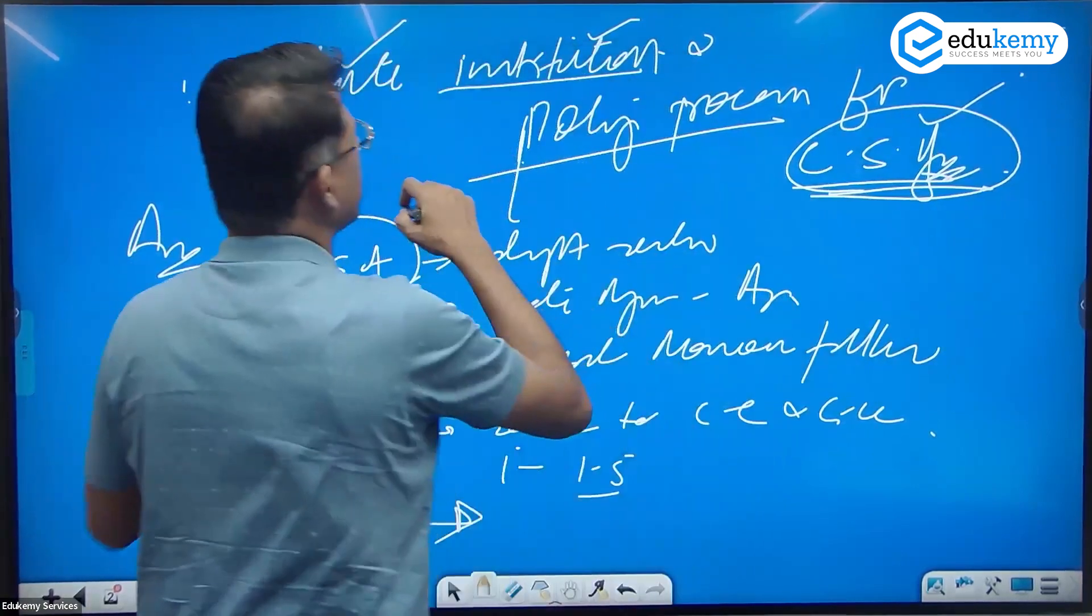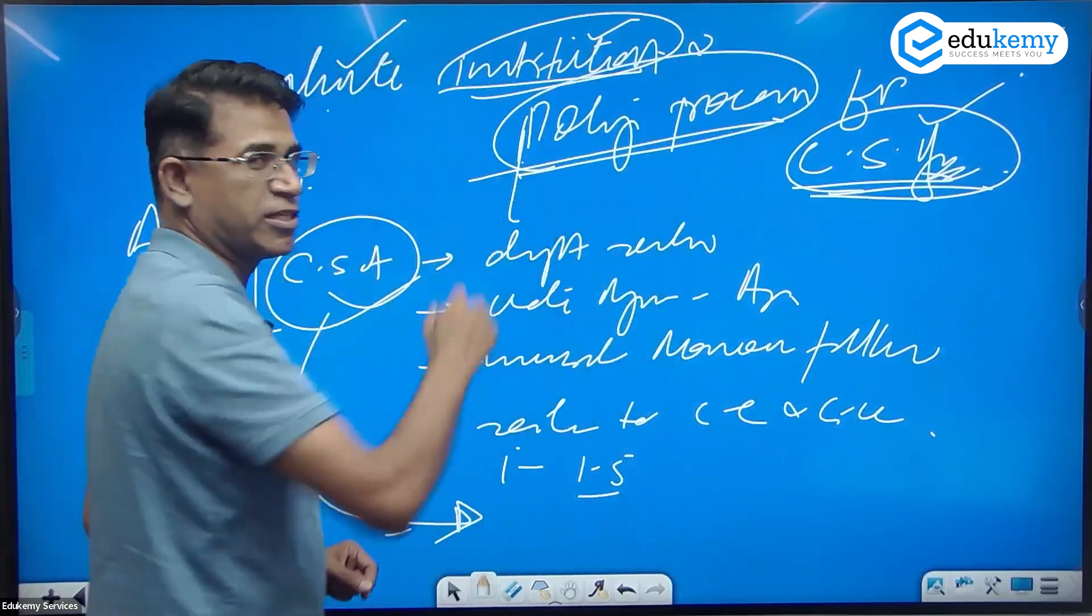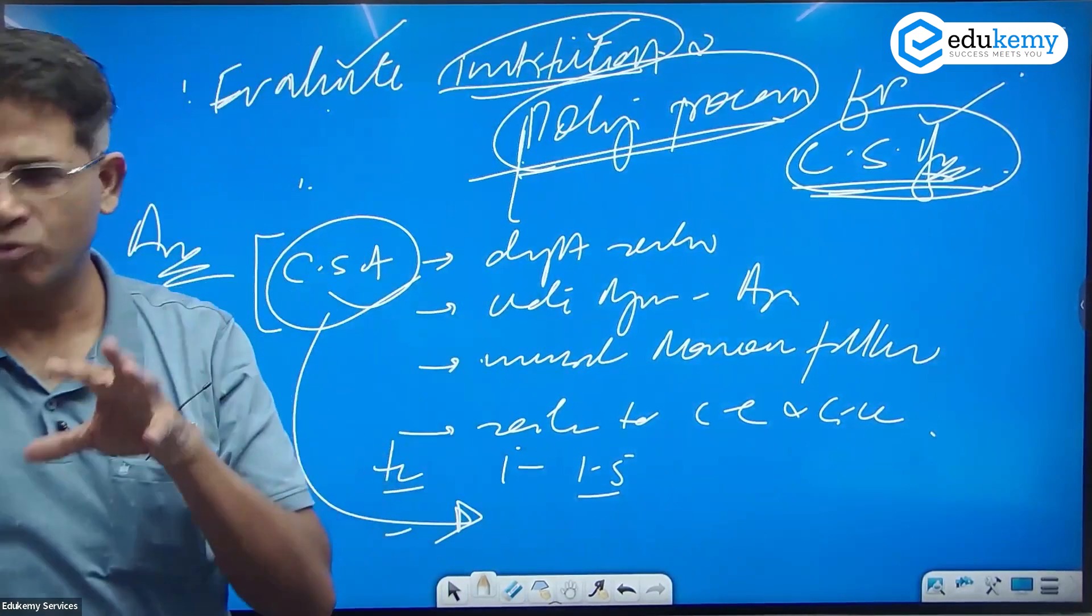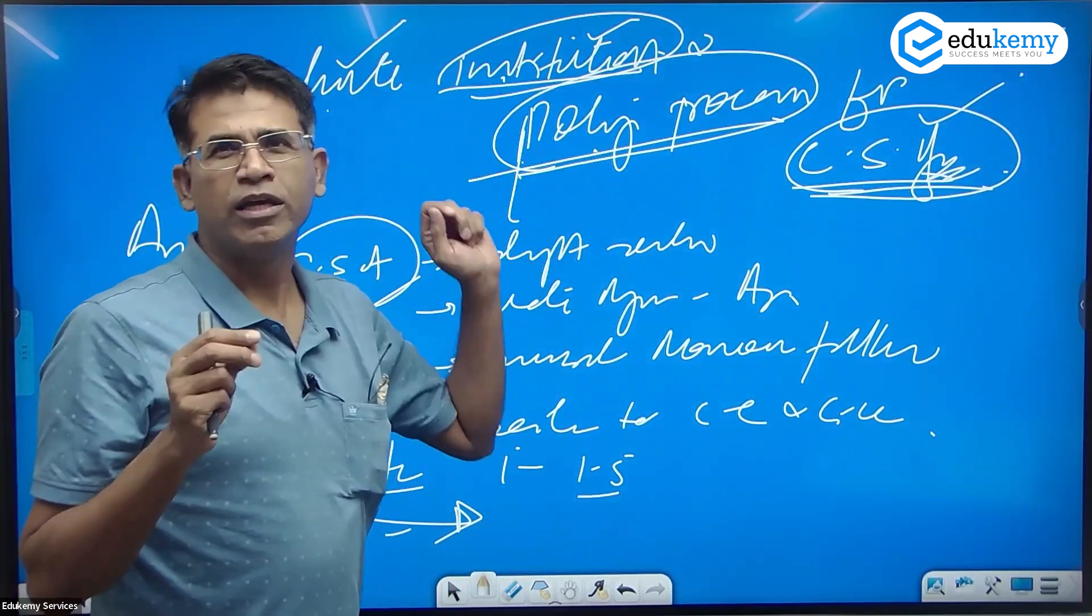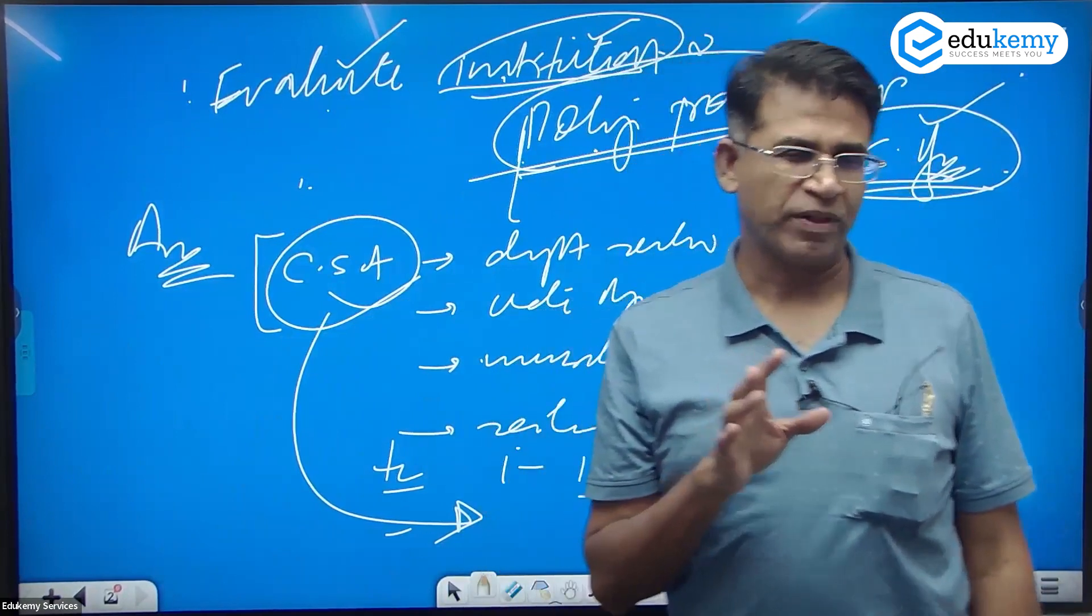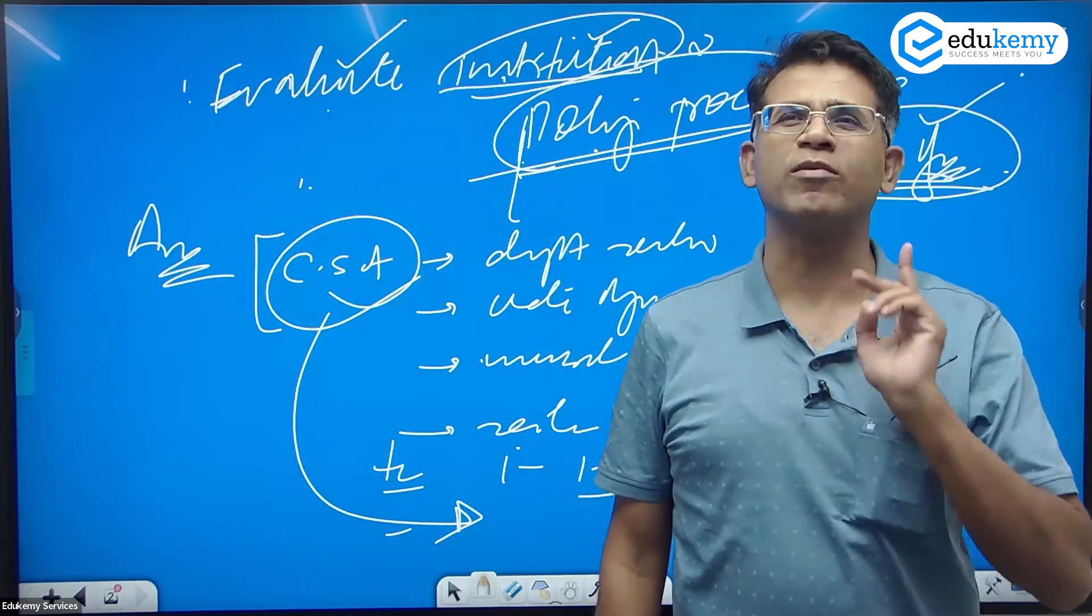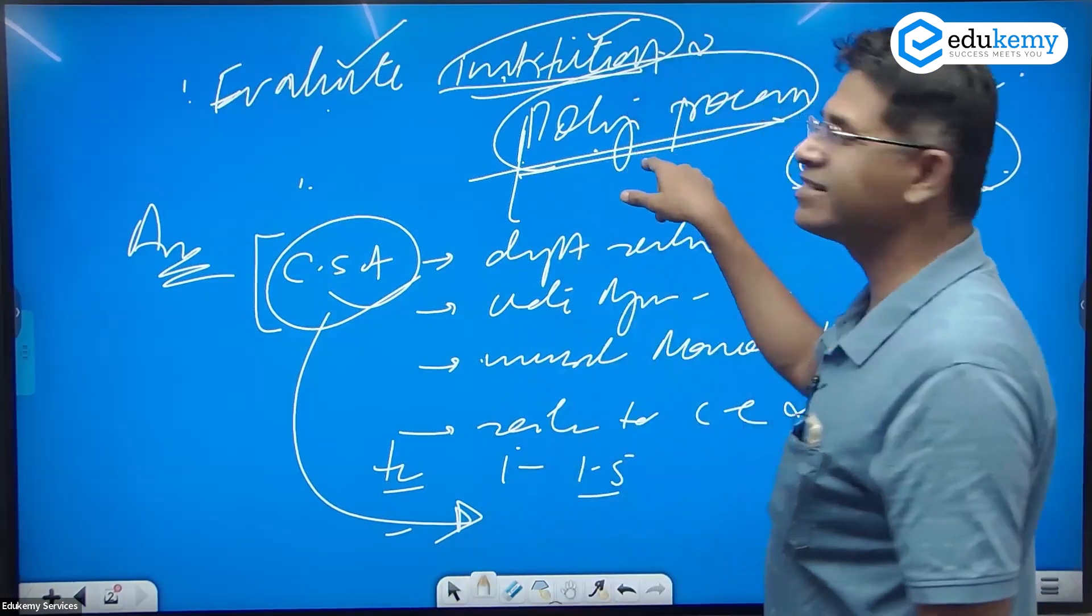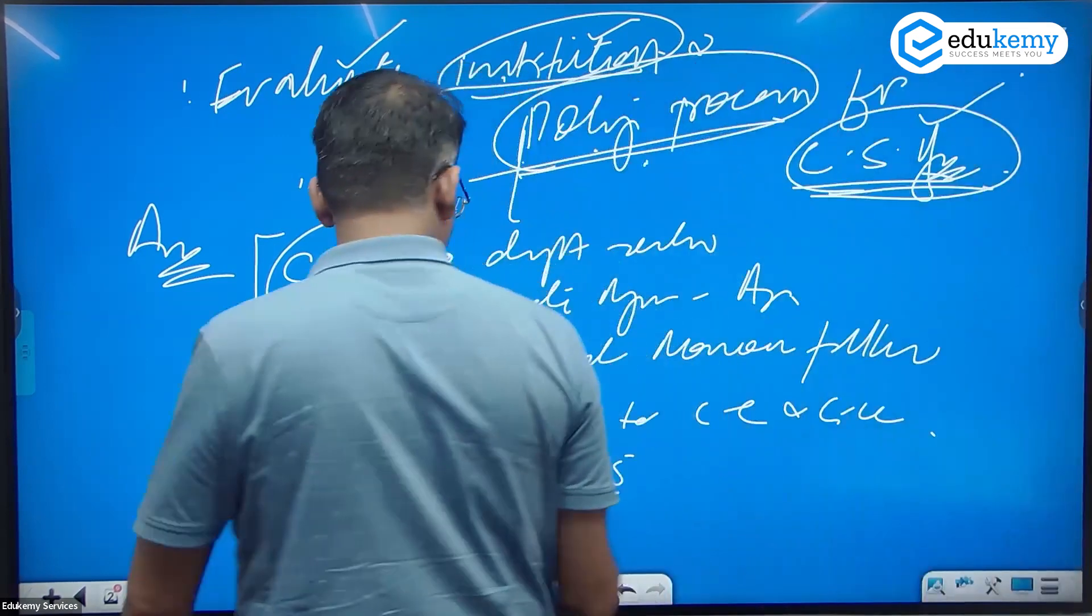Now I'm saying, what are the institutional processes and what are the policy processes? Which is easier to attack? Institution or policy? Policy is the easier part, not the specifics.